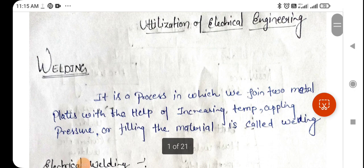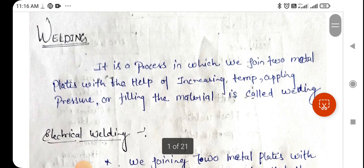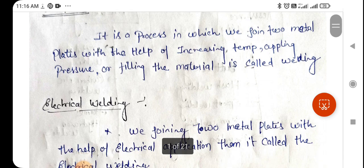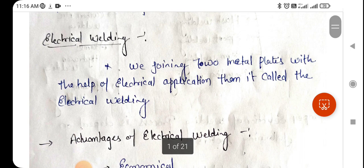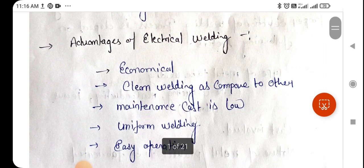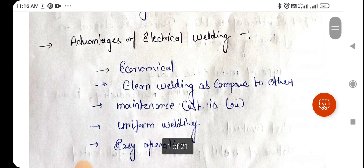Hello everyone, I am Puja Singh. Today we are going to discuss about welding. This is a part of utilization of electrical energy. Welding is a process in which we join two metal plates with the help of increasing temperature, applying pressure, or filling the metal. Joining two metal plates with the help of electrical application is called electrical welding.